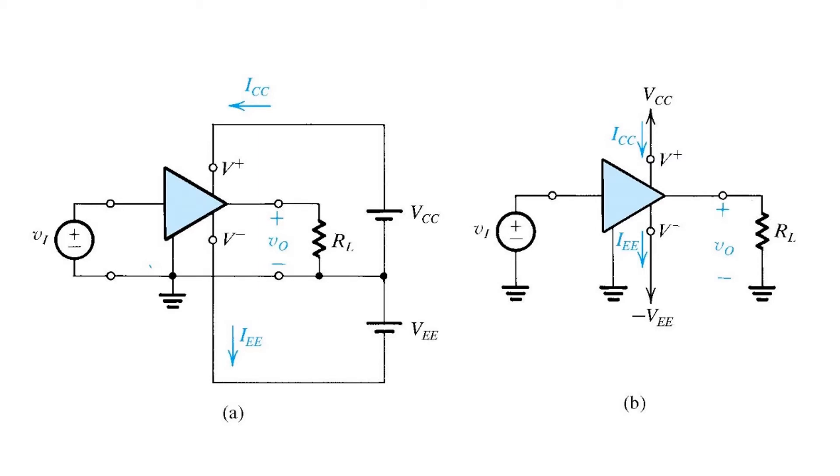Alternatively, the simplified schematic may look like this, with the power supplies shown with labels VCC and negative VEE, but without explicitly showing the voltage sources, as is done on the left.